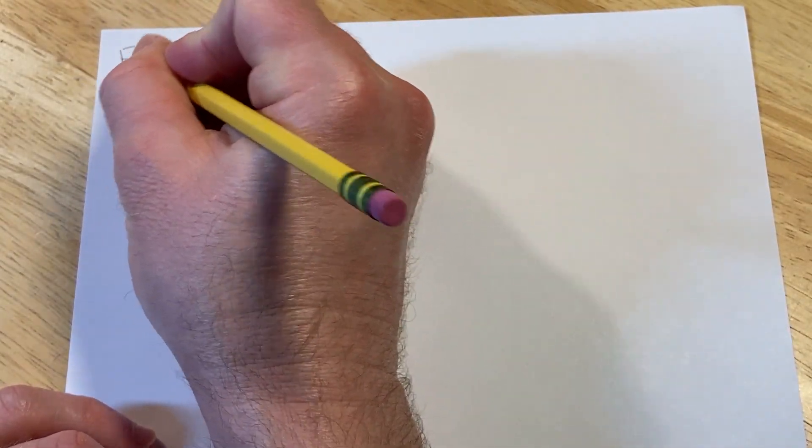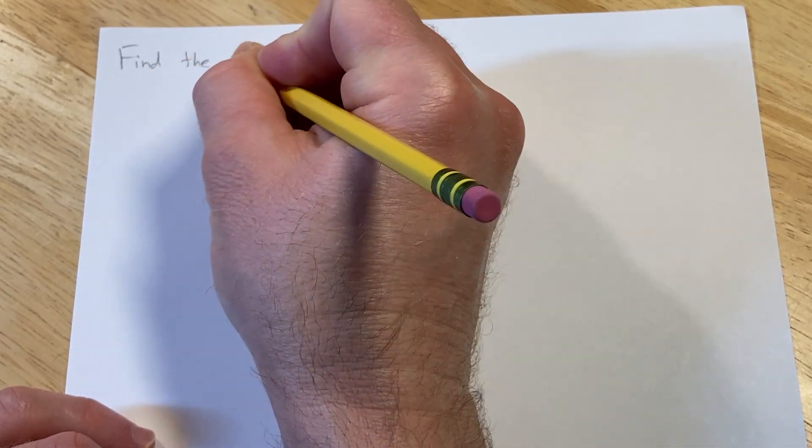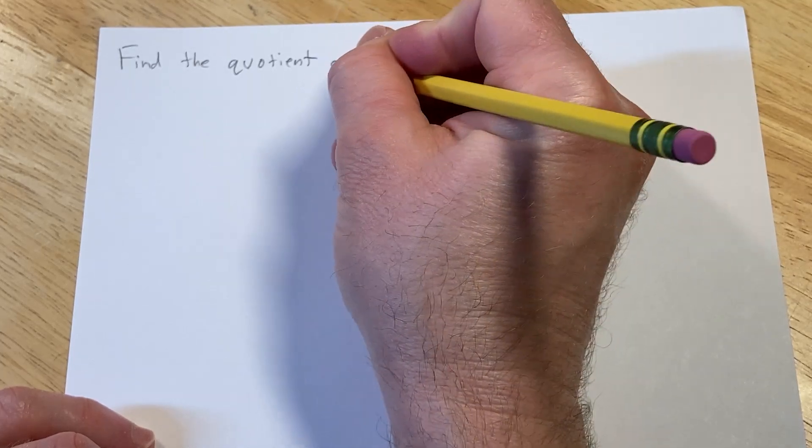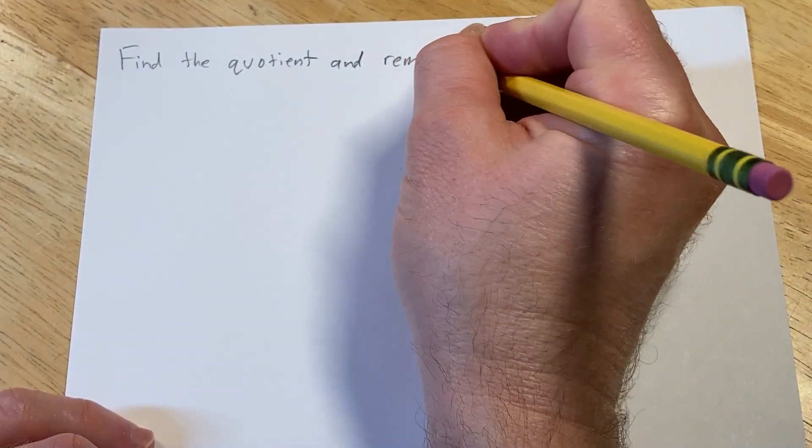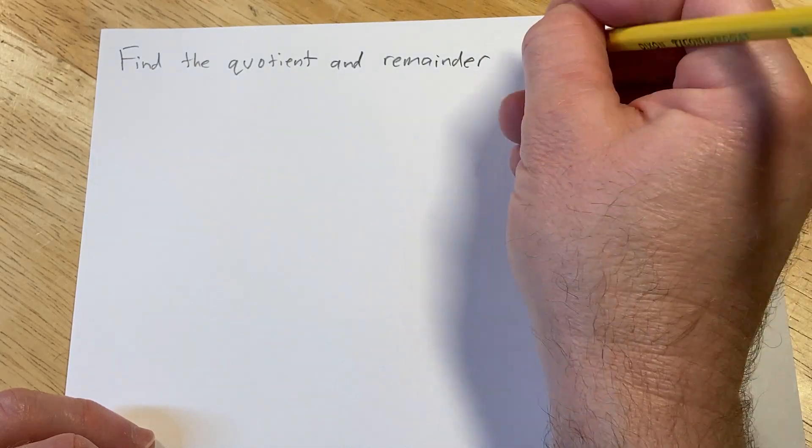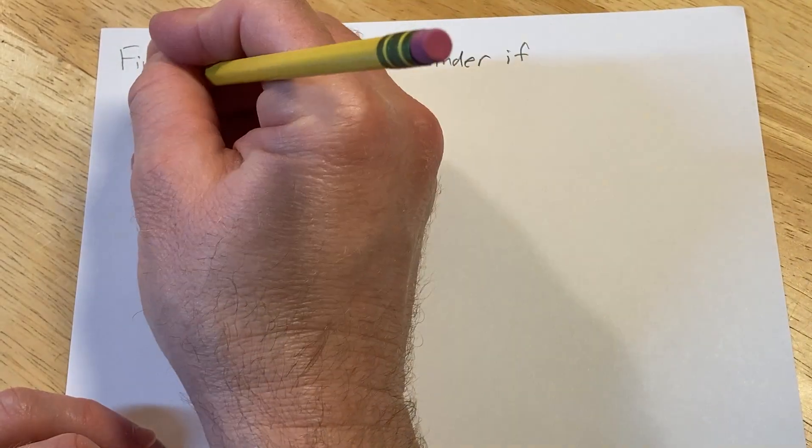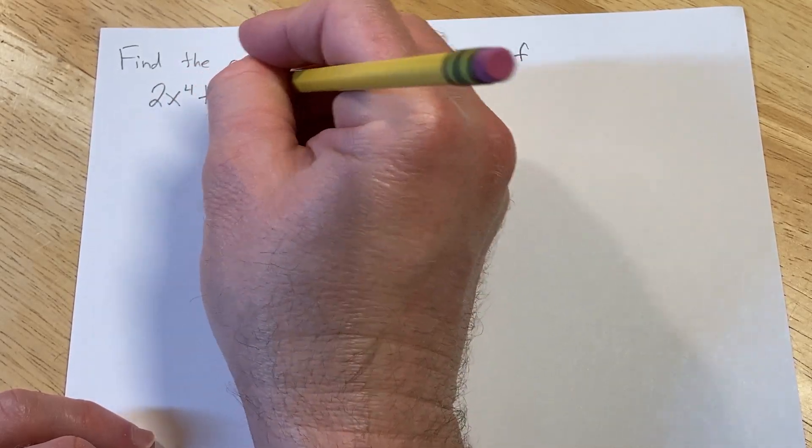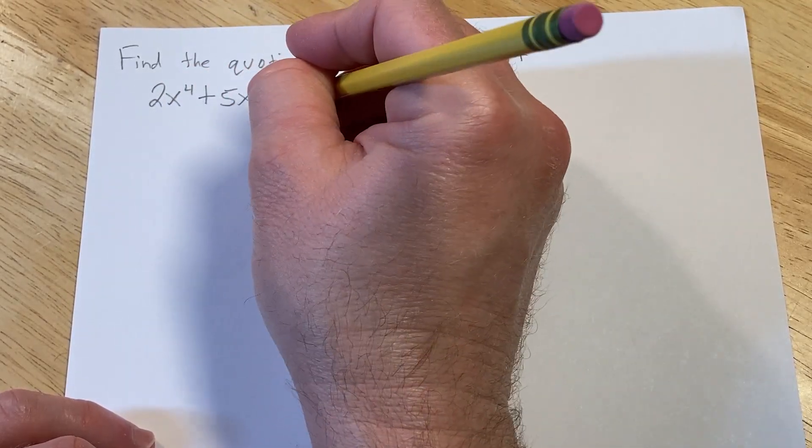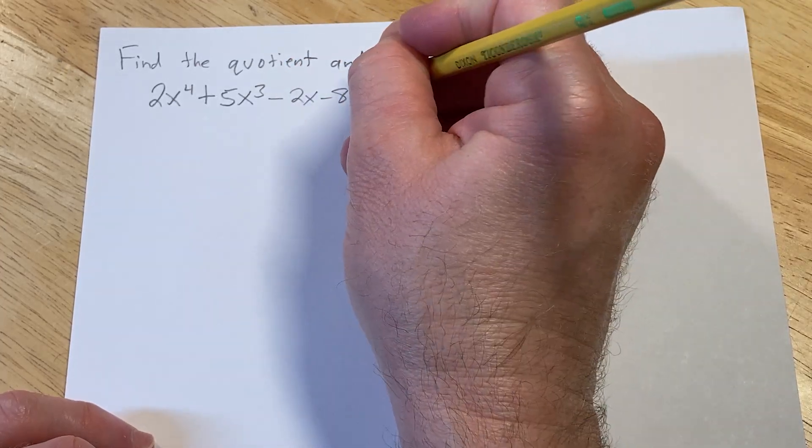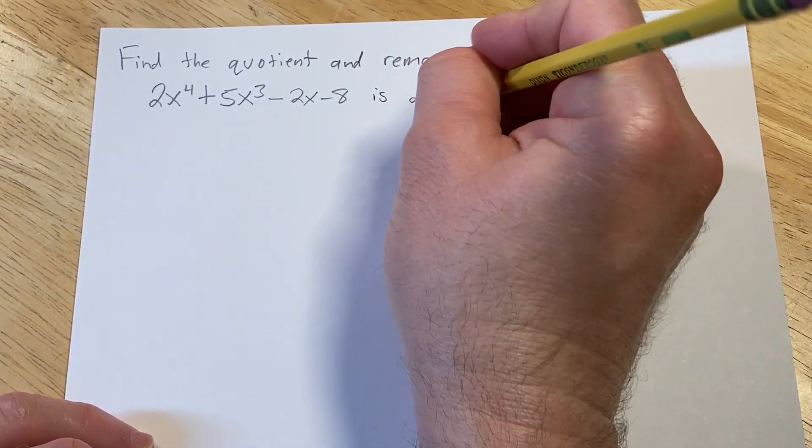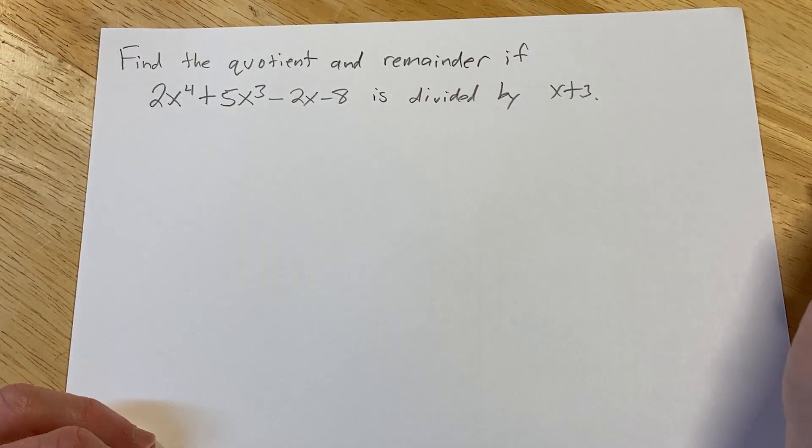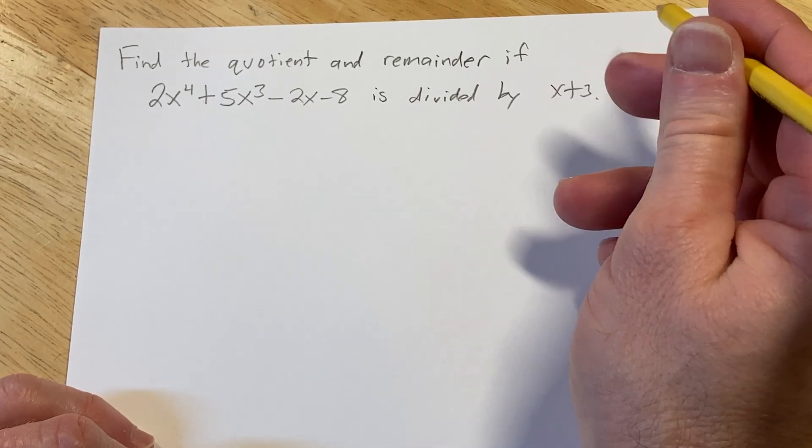So find the quotient and remainder if 2x to the fourth power plus 5x cubed minus 2x minus 8 is divided by x plus 3. So we're going to work this out and I'm going to show you how to do it. This is a useful problem. Synthetic division is very powerful.